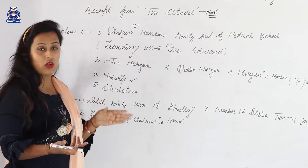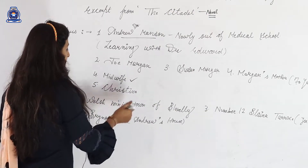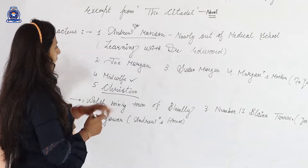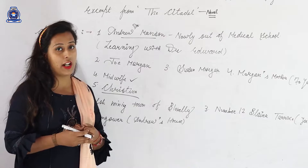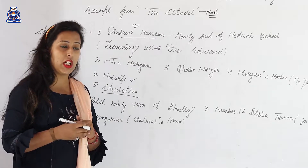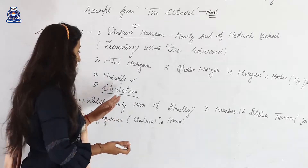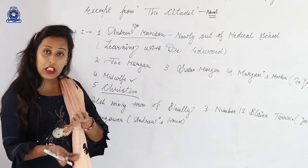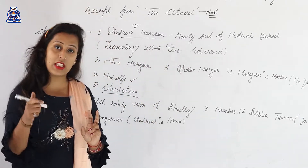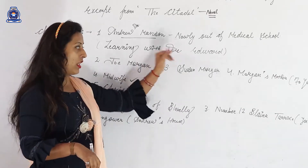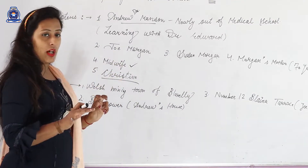The story starts with Dr. Andrew Manson being upset. His girlfriend is Christine, and he is confused about whether he should plan his future with her or not. He is already upset about his relationship with Christine. On the same day, there is also some conflict with Dr. Edward, and Andrew is quite disturbed.